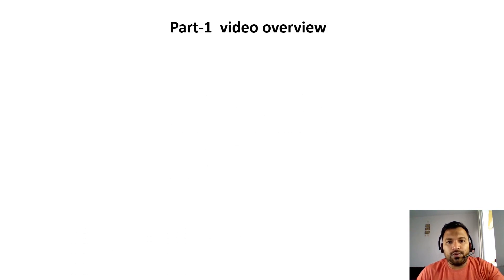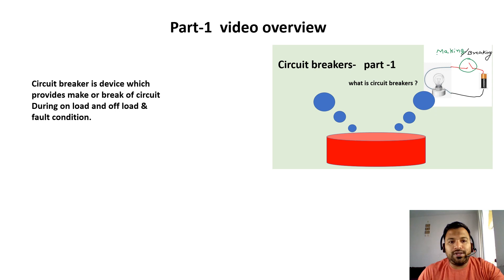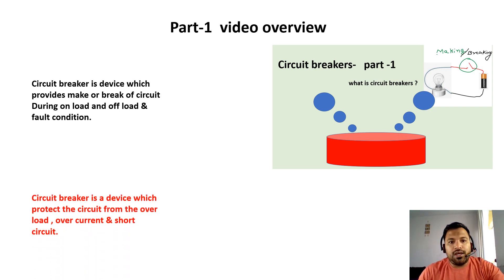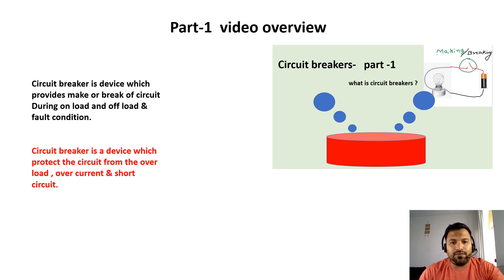In the part 1 video overview, we discussed what the importance of the circuit breaker is, why circuit breakers are required, and what is the importance. Circuit breakers are basically devices which provide make or break of circuits during load, off-load, and fault conditions. Circuit breakers are basically required because of overload, overcurrent, and short circuit protections. Those details are discussed in the part 1 video, so if you haven't watched it, go and watch the video and learn about the importance of circuit breakers.